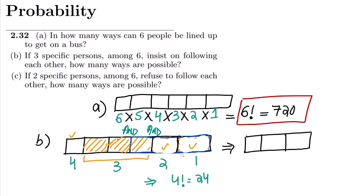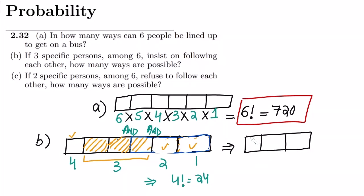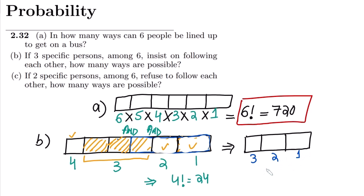But within those three spots occupied by the group, there are also different internal arrangements. If we call them A, B, C, the group can be arranged as A-B-C, B-C-A, C-A-B, and other permutations. The number of options for the first internal position is three, then two, then one — so the internal arrangements give us 3 factorial, which equals 6.